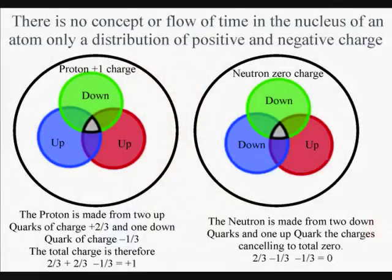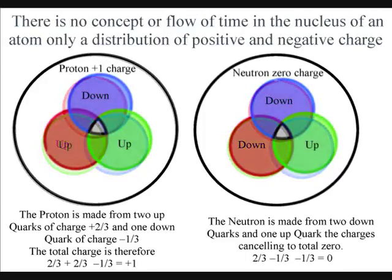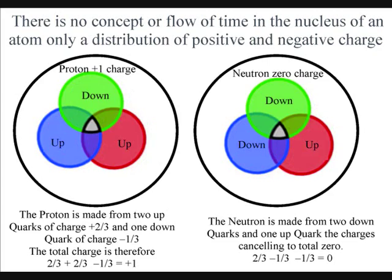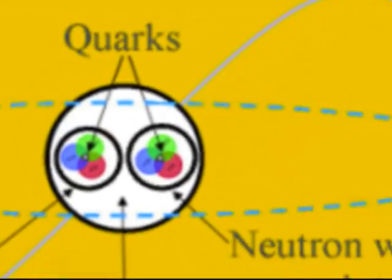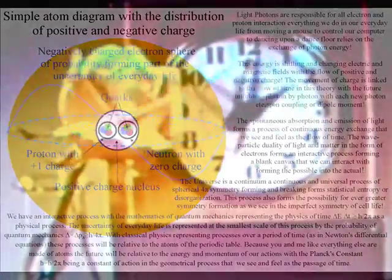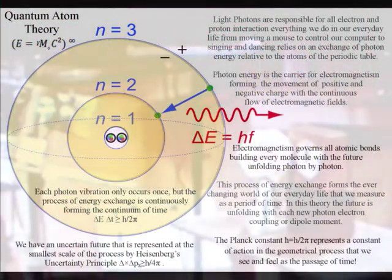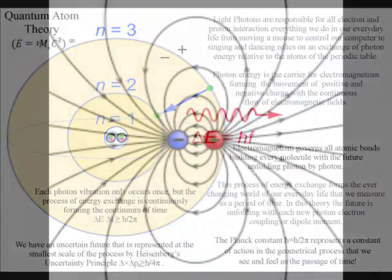That's really strange. In other theories, it can seem puzzling that there is no concept or flow of time in the subatomic world — within the atoms governed by the strong nuclear force. But in this theory, nothing could be more logical. Because the future is unfolding with each new photon-electron coupling, or dipole moment, in an interactive process that is unfolding outside the atomic nucleus, and is relative to the electromagnetic force.